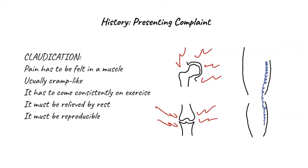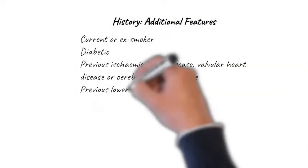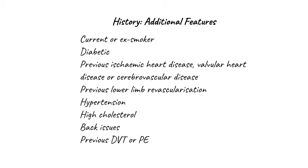How do we differentiate actual claudication from these other types of leg symptoms? For claudication, pain must be felt in a muscle — pain in a hip, a knee, or generalized leg throbbing or aching is generally not claudication. Claudication pain is usually cramp-like, it must come on consistently on exercise meaning every time the patient exercises, not just occasionally. It must be relieved by rest, it must be reproducible, and it has to be happening every time the patient walks a certain distance.